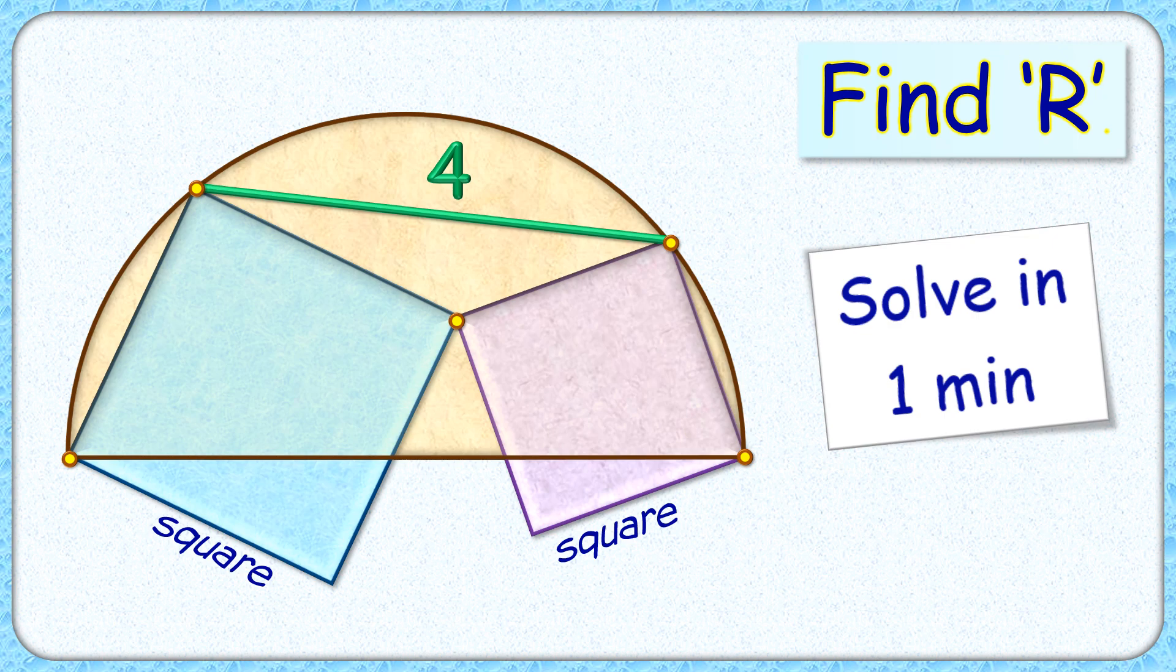Wow, this interesting question with a semicircle and two squares inside it. The distance between these vertices of the squares is 4 centimeters. The exciting part is, can you find the radius of this semicircle in less than a minute?